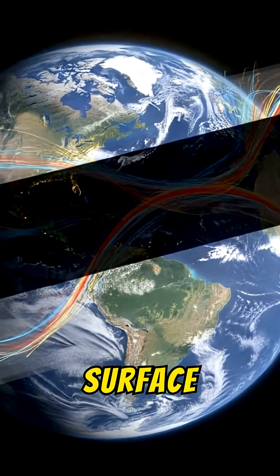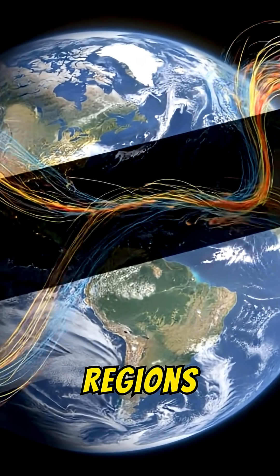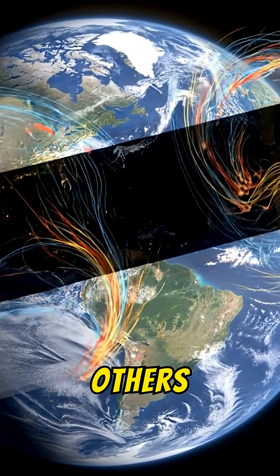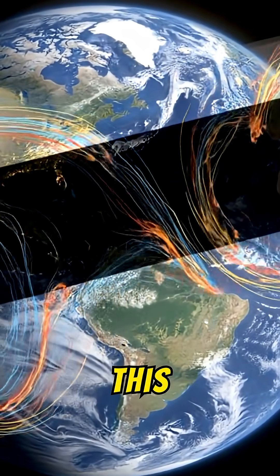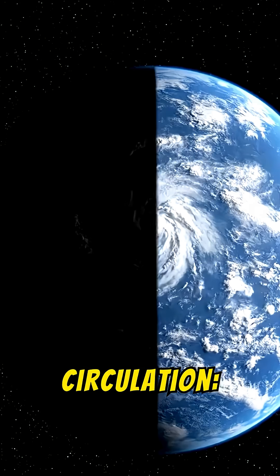Sunlight would reach the surface unevenly, turning some regions into colder, dimmer zones while others stayed fully exposed. This imbalance would change atmospheric circulation.